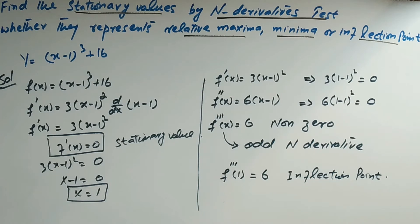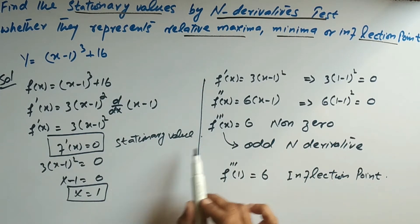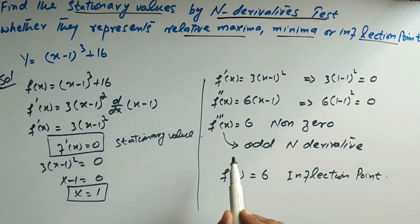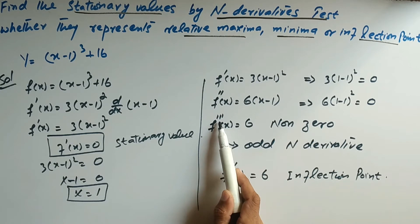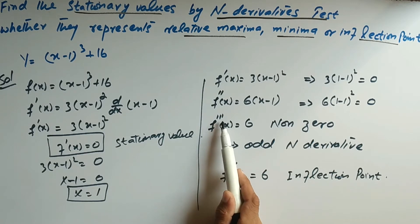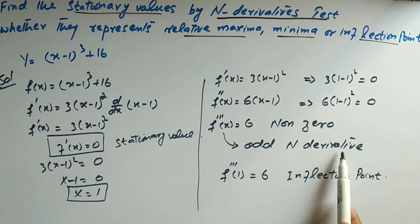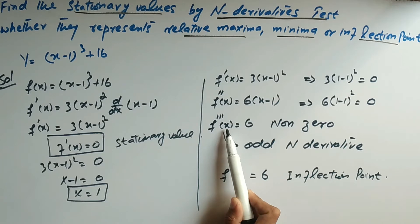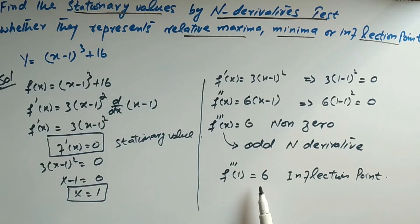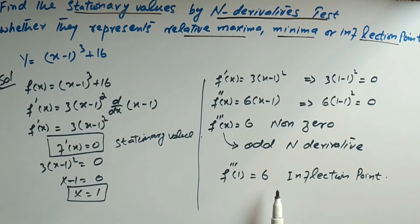To summarize: we took the first, second, and third derivatives. We found where the derivative is non-zero — that is the third derivative. Since the third derivative is odd and f'''(1) = 6, we conclude this is an inflection point. This completes question 1 of exercise 9.6.